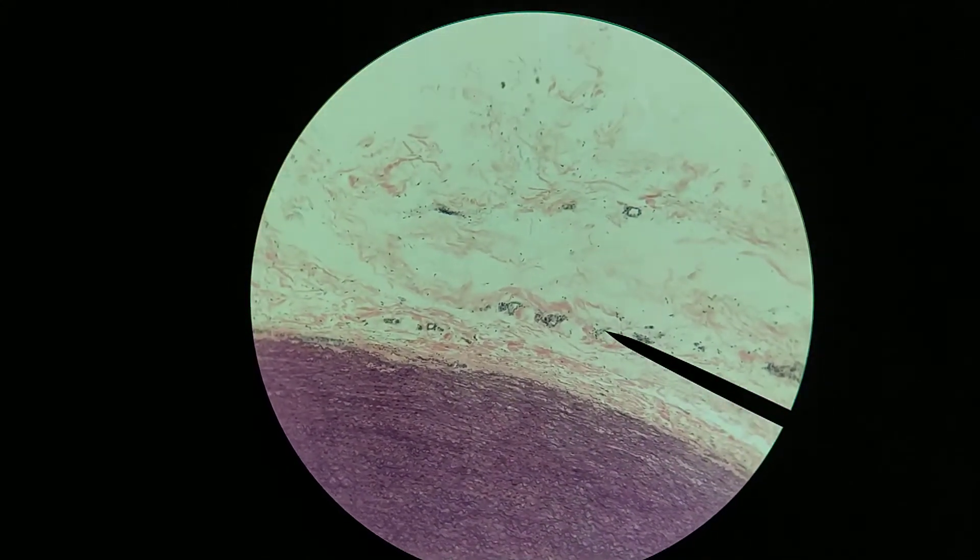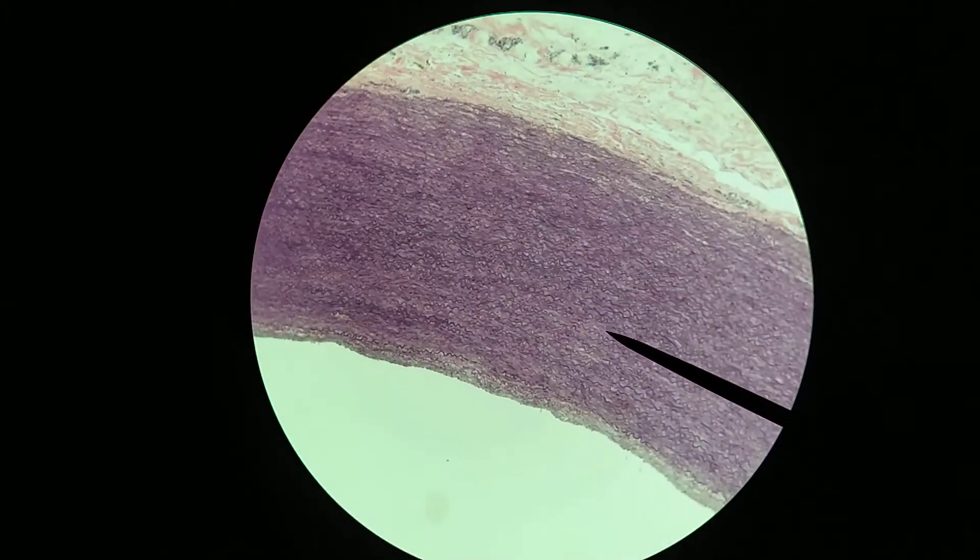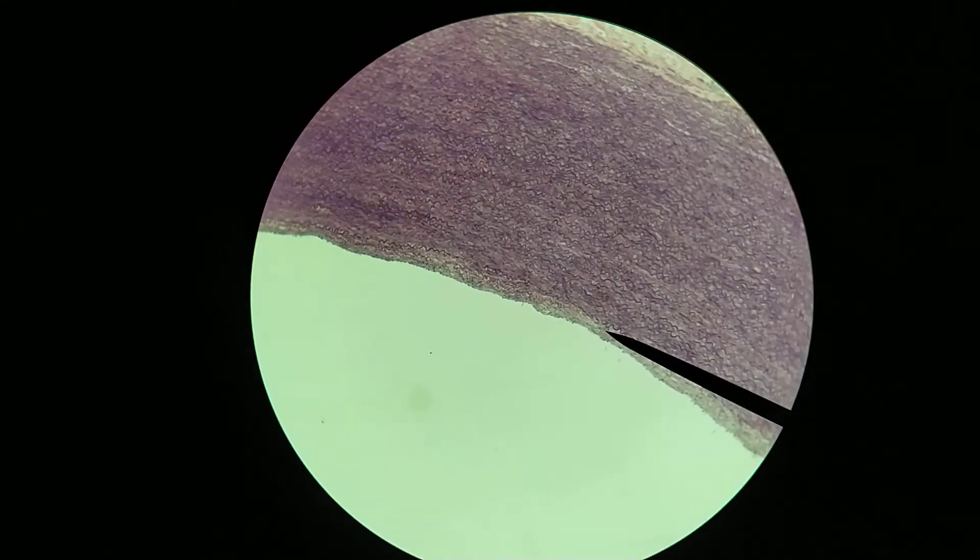And then the tunica adventitia around the outside, a much thinner layer. And again, this is an artery, so the tunica media is really the main layer, the thickest layer of this particular blood vessel.